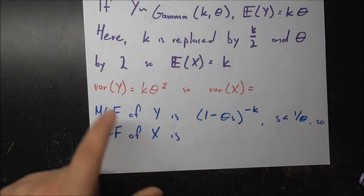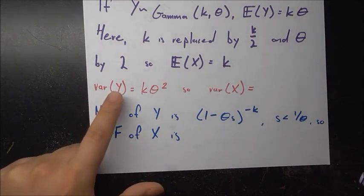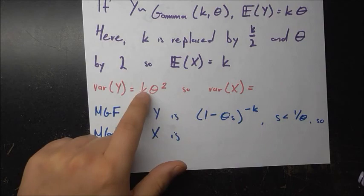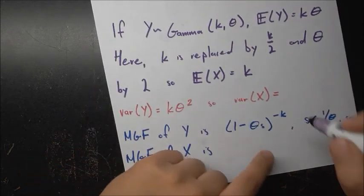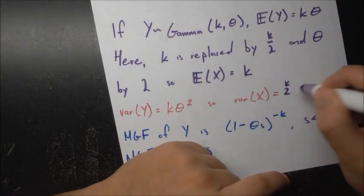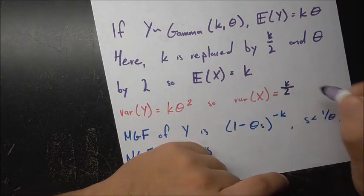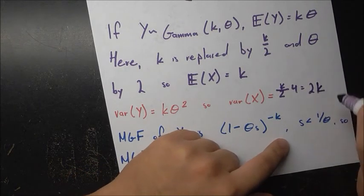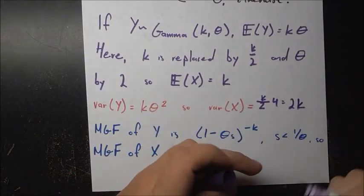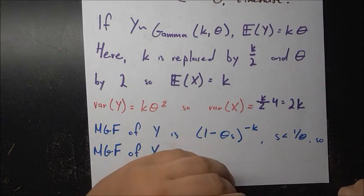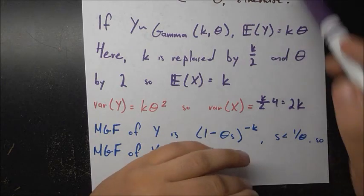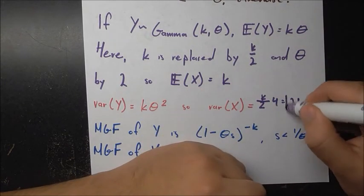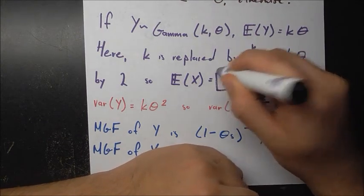Using the same trick, the variance of a gamma distribution is k·theta². Here k is replaced by k/2 and theta is 2, so theta² is 4, giving us variance equal to 2k. So the variance of a chi-squared distribution with k degrees of freedom is just 2 times the number of degrees of freedom.